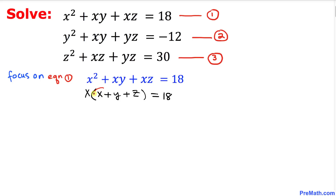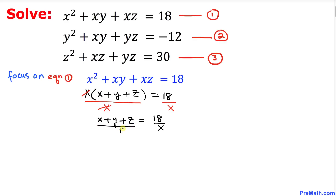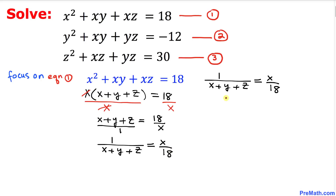Now let's isolate the x plus y plus z part. I am going to divide both sides by x, so x cancels, and we get x plus y plus z equals 18 over x. Putting 1 underneath and flipping both sides, we get 1 over (x plus y plus z) equals x over 18. Let me call this equation number four.